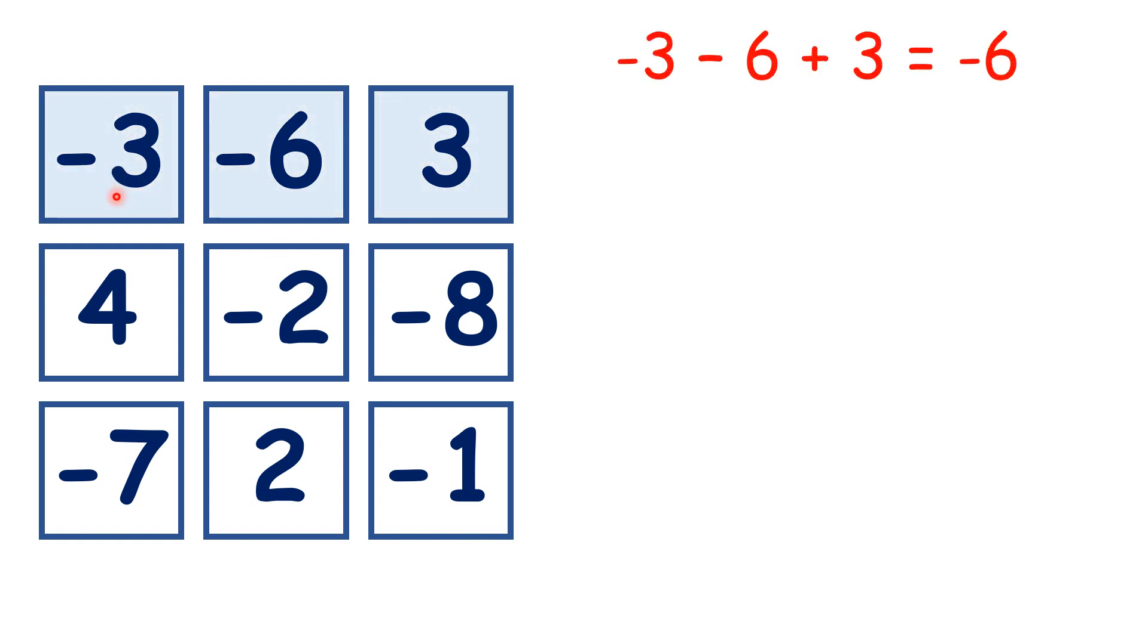So, going along the rows, minus 3 minus 6 is minus 9, then minus 9 plus 3 is minus 6. So all of our other rows, columns, and diagonals must total minus 6 as well.